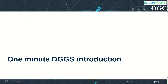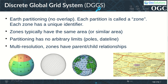Before delving into APIs, let's have a quick look at DGGS concepts. A discrete global grid system is a partitioning of the Earth into equal area zones. This partitioning, unlike equal area projections, has no arbitrary limits, such as the dateline or the poles. The partitioning is hierarchical, wrapping the planet with zones at multiple resolutions, and zones share parent-child relationships as well as neighborhood relationships.